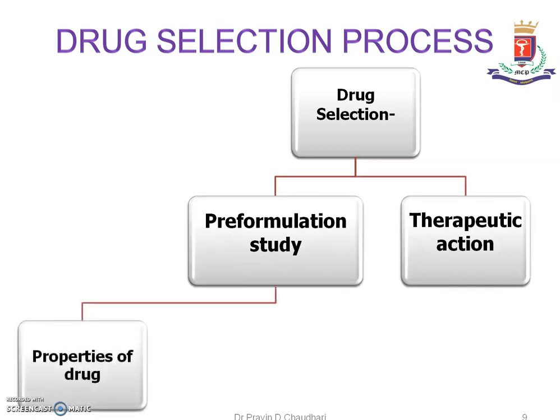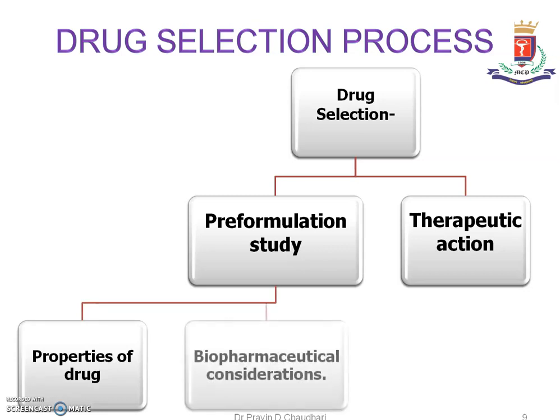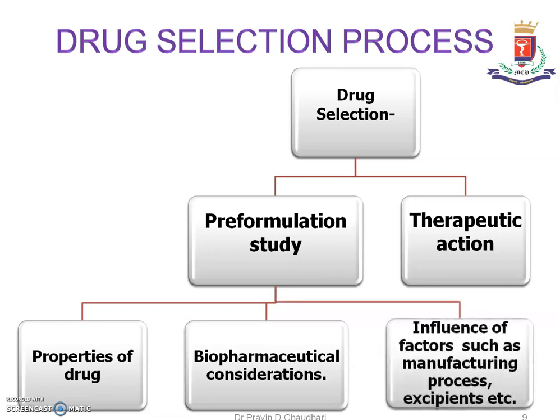The drug selection process depends upon the pre-formulation study and therapeutic action of that particular drug. Factors considered in pre-formulation study include properties of the drug, biopharmaceutical considerations, and the influence of factors such as manufacturing process and excipients. The properties a drug needs for selection in tablet manufacturing are: compatibility with all excipients, good flow property, good compressibility, good organoleptic properties, high purity and stability, suitable particle size and particle size distribution, and optimum bulk powder properties.